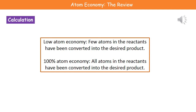We need to understand what that percentage actually means. A low percentage, closer to zero, means a low atom economy — only a very small number of the atoms we started with in our reactants are being converted into the product we want, so there's a lot of waste. If we have 100% atom economy, every atom in our reactants has been converted into the desired product. The Haber process, which is how we make ammonia from nitrogen and hydrogen, is an example with 100% atom economy.